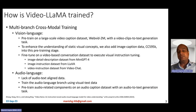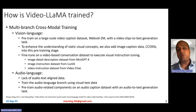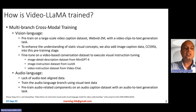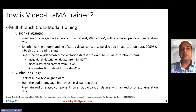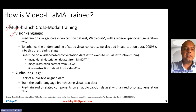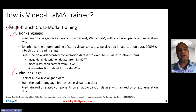So how is the VideoLlama model trained? We saw the architecture — now how is it trained? Since there are two different branches, it's trained in a multi-branch cross-modal way, which is what they call multi-branch cross-modal training. There are two parts to the training: vision-language training and audio-language training.